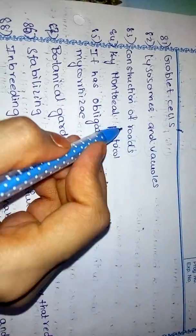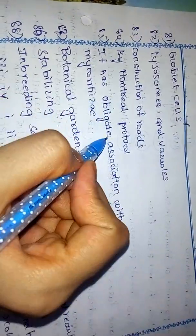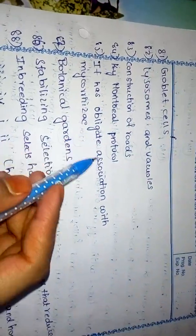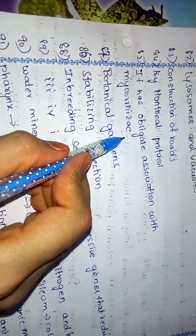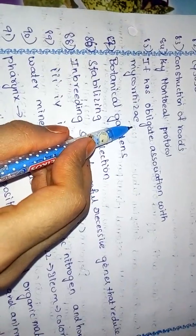Goblet cells. 82. Lysosomes and vacuoles. 83. Construction of roads. Mitochondrial cristae. In options you can choose. It has obligate association with mycorrhiza. Botanical gardens. Stabilizing selection.